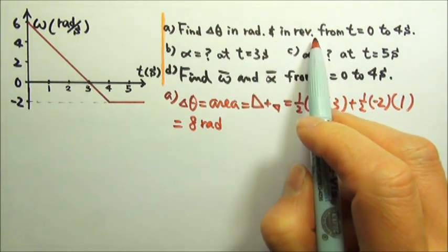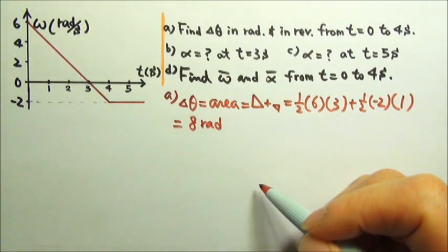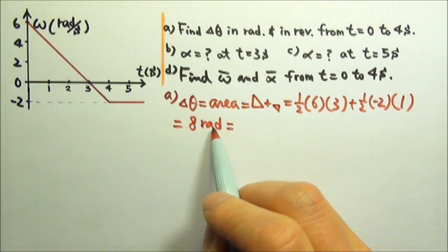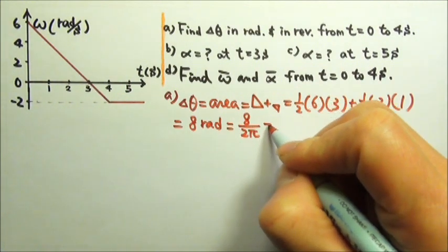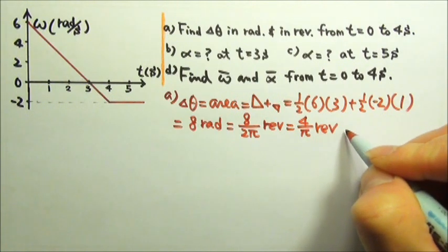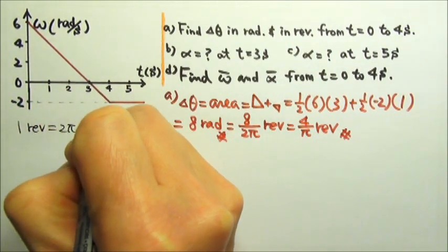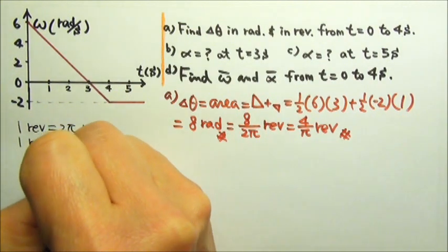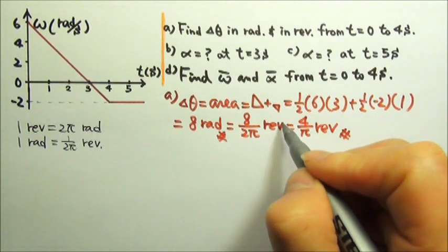We also want our displacement in revolutions. One revolution is one circle, which means the angle in one revolution is two pi radians. So if I want to know how many revolutions this equals, I divide eight by two pi, which gives four over pi revolutions. We can also note that one radian equals one over two pi revolutions, and substituting gives the same result.